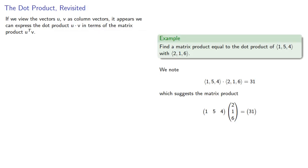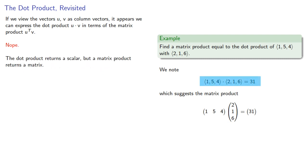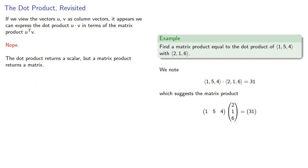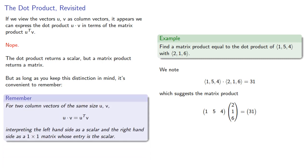If we view the vectors u and v as column vectors, then we can express the dot product u dot v in terms of the matrix product u-transpose v. The important thing to note is that the dot product returns a scalar, but the matrix product returns a matrix. As long as you keep this distinction in mind, it is convenient to remember that for two column vectors of the same size u and v, u dot v equals u-transpose v, where we interpret the left-hand side as a scalar and the right-hand side as a one-by-one matrix whose entry is that scalar.